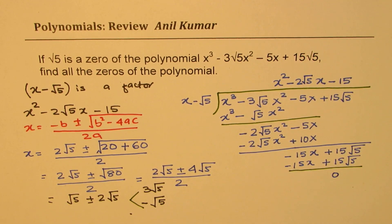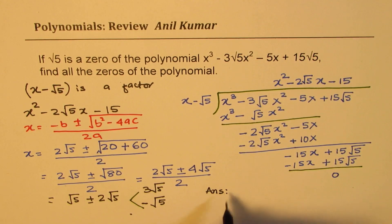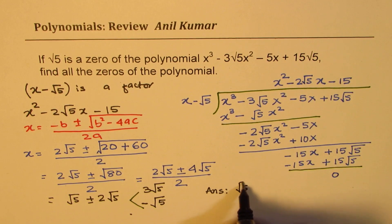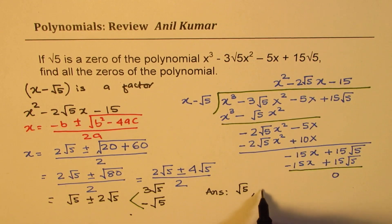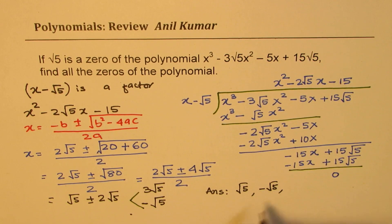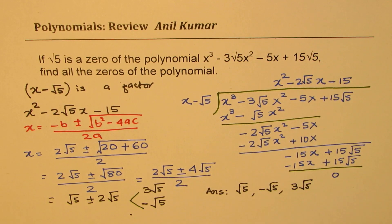So now we can write down our answer, which is, the roots are, one square root 5 is given to us. The second one is minus square root 5. And then, we have 3 square root 5.